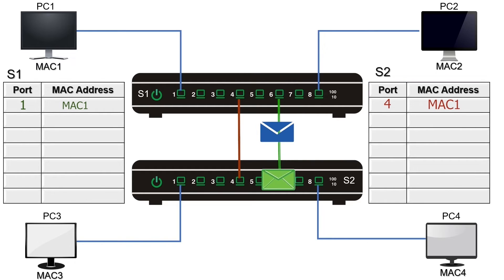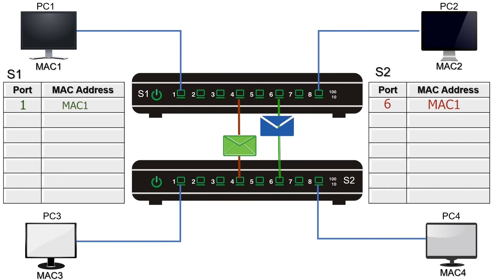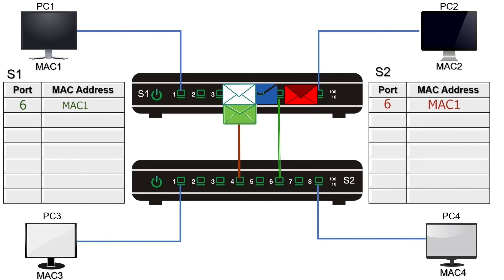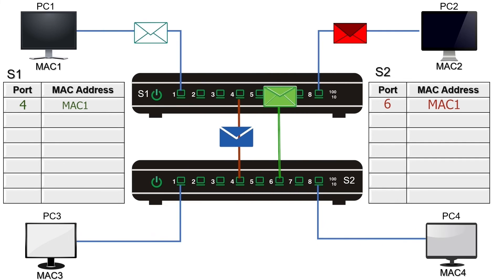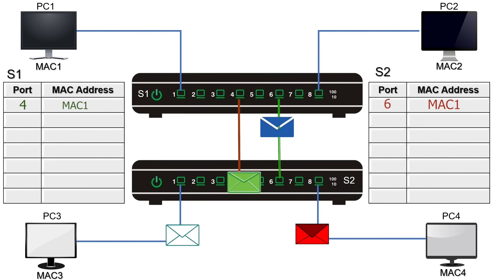Now S2 receives the same frame on port 6. It reads the source and destination addresses and updates the CAM table. Since it received the frame on a new port, it assumes the device has relocated and attaches the source address with port 6. After updating the CAM table, it forwards the frame from all ports. S1 receives both frames back from S2 in reverse order — on port 4 it receives the frame forwarded by port 6, and on port 6 it receives the frame forwarded by port 4. It repeats the same learning and forwarding process. Similarly, S2 receives its forwarded frames back on ports 4 and 6 in reverse order, takes the same steps, and forwards them back to S1.